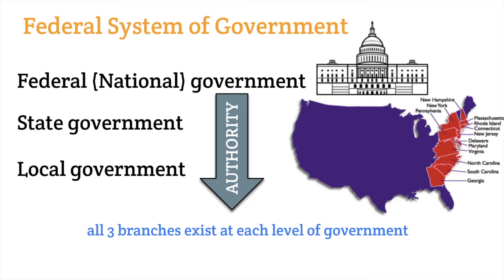As we talk about the branches, remember that all branches exist at all levels — there is a federal executive, a state executive, and a local executive. Amongst these levels, there are certain powers that some have and some don't, but for the most part all three levels share similar powers and responsibilities. A federal system of government is created in the United States Constitution.